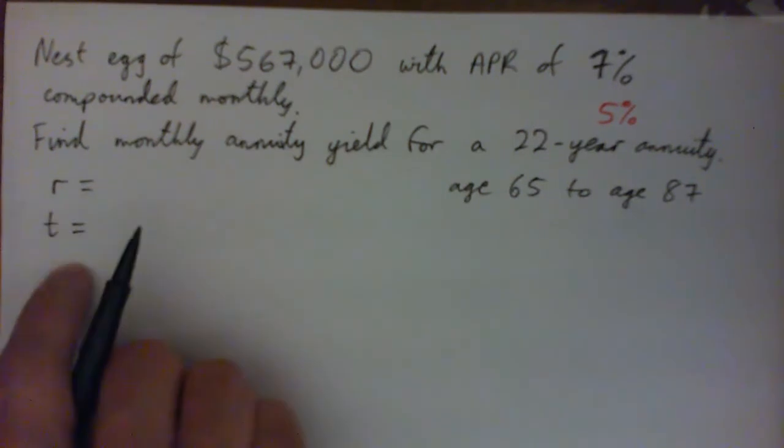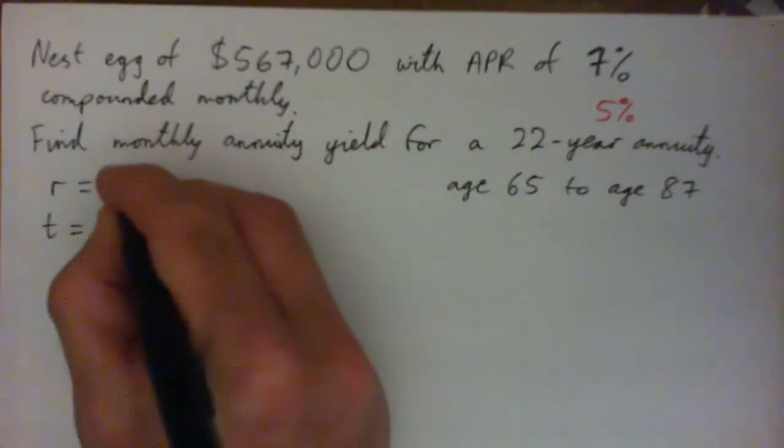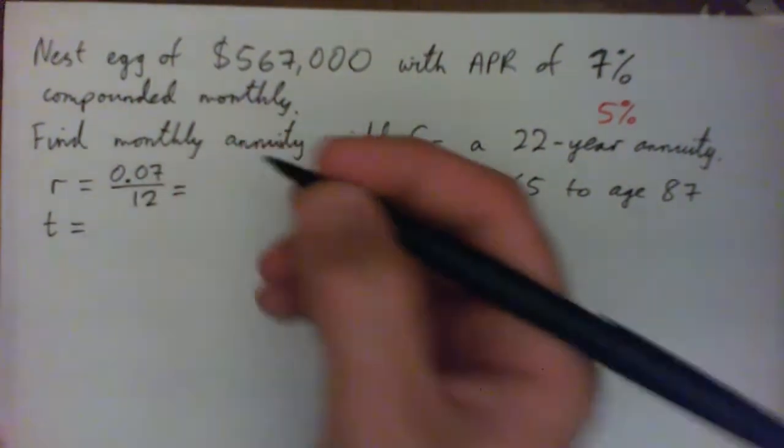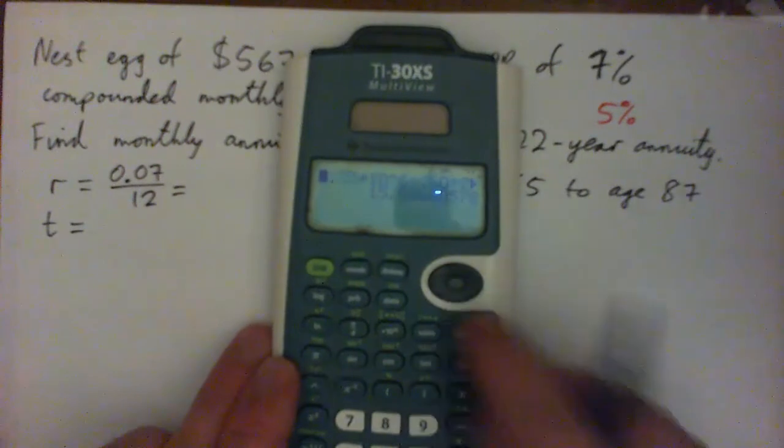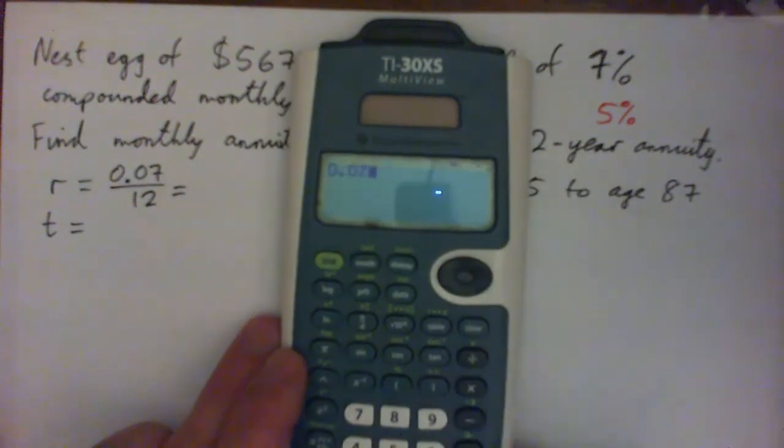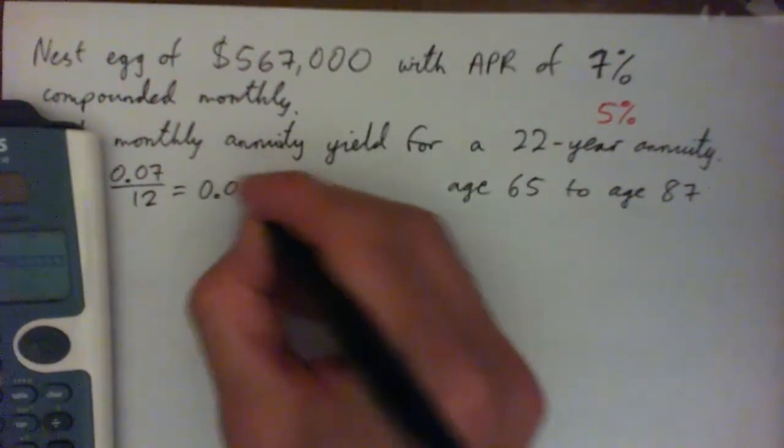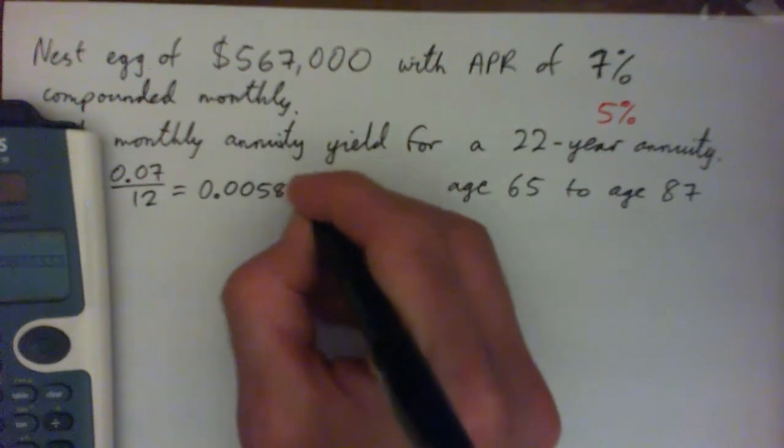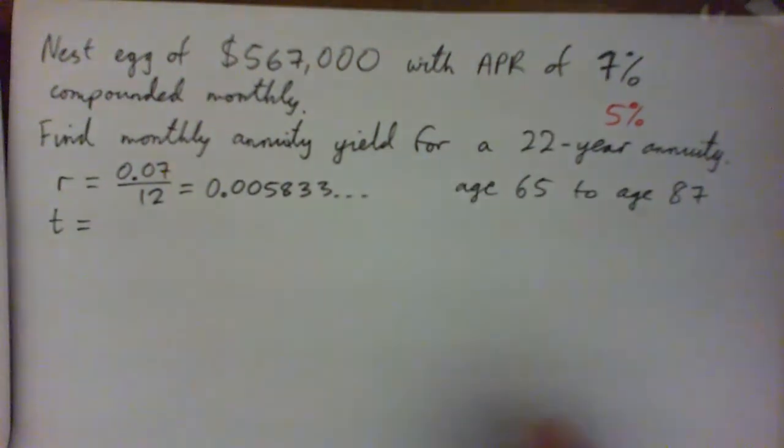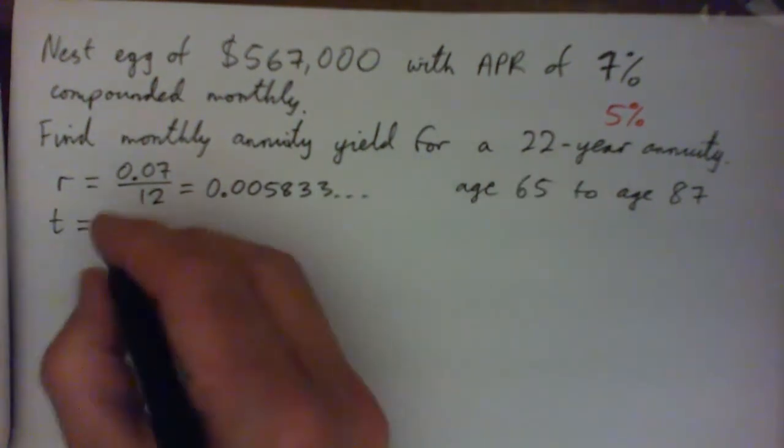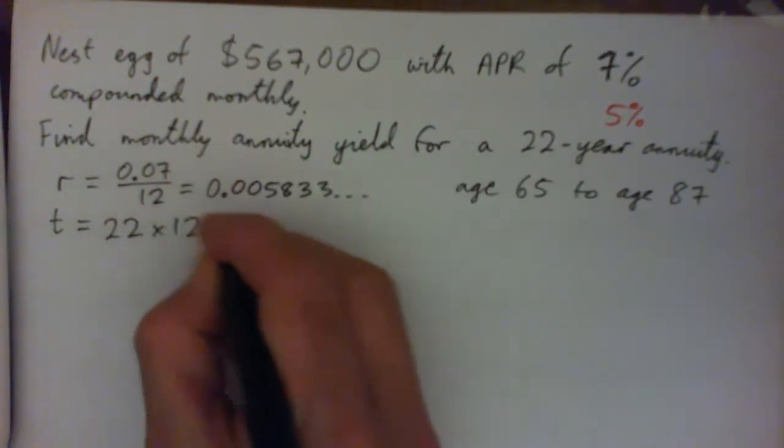So it's nest egg times r times 1 plus r to the power of t. So we need our r and our t. So the rate is going to be 0.07 over 12, which is going to be a big long decimal. And this example, I'm not going to use that. I'm going to do the exact calculation. So it's 0.0058333 forever. And t is the length of the annuity, 22 years. Years times 12 gives the amount of months, 22 times 12.